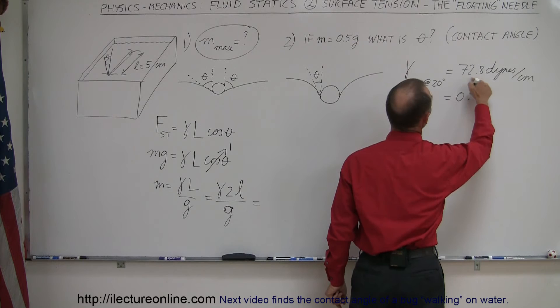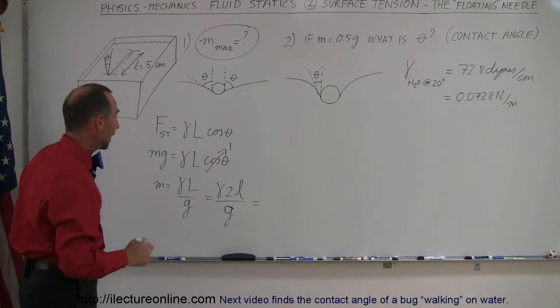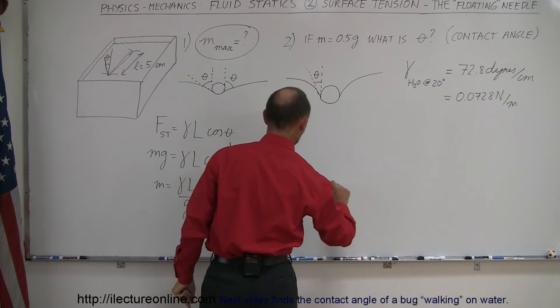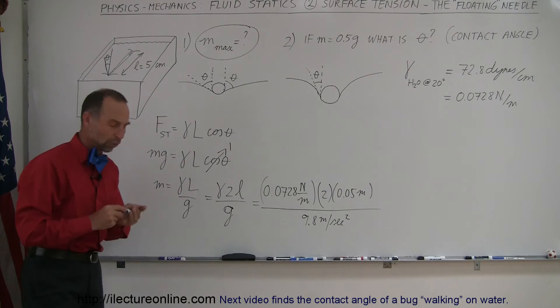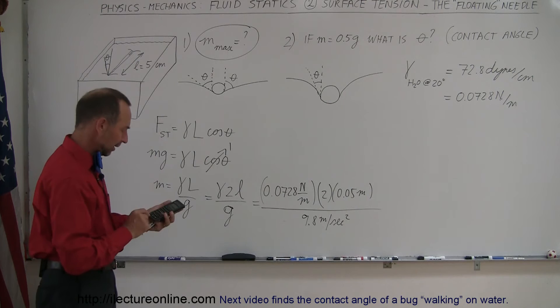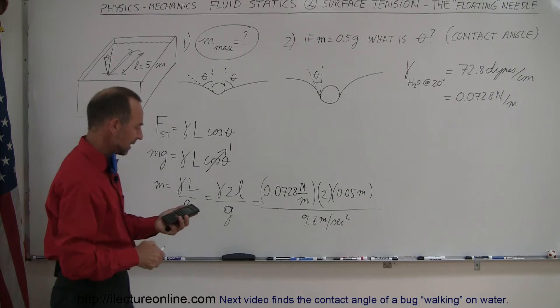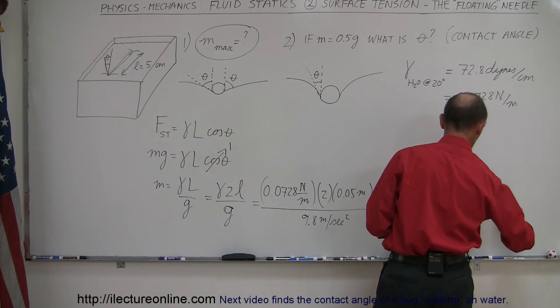Converting to SI units, 72.8 dynes per centimeter equals 0.0728 newtons per meter. The coefficient is 0.0728 N/m, the length is twice 5 centimeters which is 0.05 meters, divided by 9.8 m/s². We could use CGS units but most books use SI, so we convert. So we have 0.0728 times 2 times 0.05 divided by 9.8, which gives us a mass of 7.4 × 10⁻⁴ kilograms — converting to grams, that's 0.74 grams.